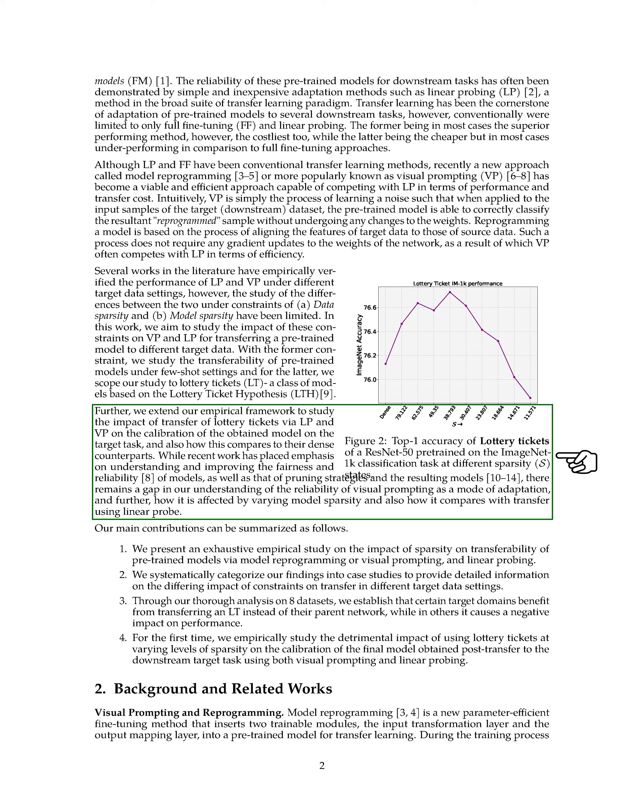We'll also investigate how the transfer of lottery tickets via linear probing and visual prompting affects the calibration of the model on the target task, and how this compares to their dense counterparts. Despite recent efforts to improve the fairness and reliability of models, as well as pruning strategies and the resulting models, there is still a lot we don't know about the reliability of visual prompting as a method of adaptation. We aim to fill this gap by examining how visual prompting is affected by varying levels of model sparsity, and how it compares to transfer using linear probing.